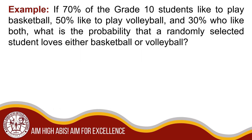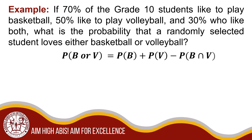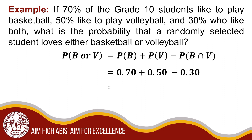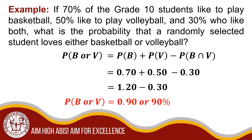If 70% of the grade 10 students like to play basketball, 50% like to play volleyball, and 30% like both, what is the probability that a randomly selected student loves either basketball or volleyball? Using the formula: P(B union V) = P(B) + P(V) − P(B intersection V). Inputting the values: 70% + 50% − 30% = 1.20 − 0.30. Therefore, the probability of B union V is equal to 90%.